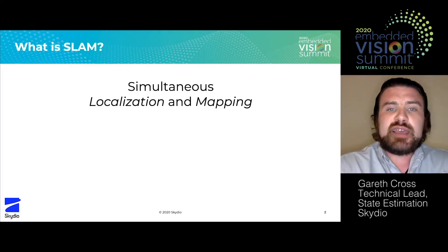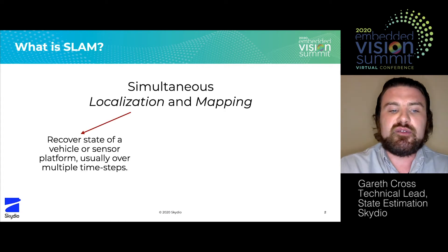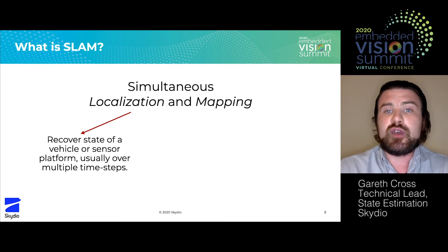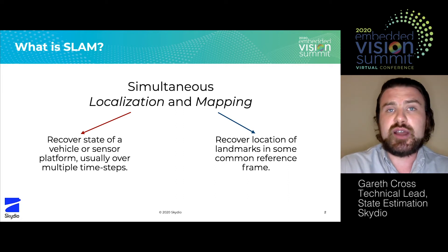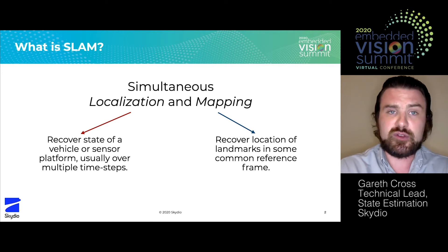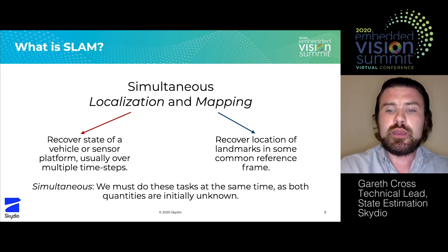What do we mean by SLAM? SLAM refers to a two-step process whereby we must simultaneously localize and map. By localization, we mean recovering the state of a vehicle or a sensor platform, usually over multiple time steps. For example, you might be interested in the position and velocity of your drone, or in the position and orientation of your AR headset or of a cellular device in the case of a mobile AR application. In the process of doing so, you typically have to build a map — recovering locations of some landmarks in a common reference frame. You need the map to compute your location, and you need your location in order to build the map, so this process has to happen simultaneously. That's what SLAM is doing at a high level: iteratively recovering these two quantities.